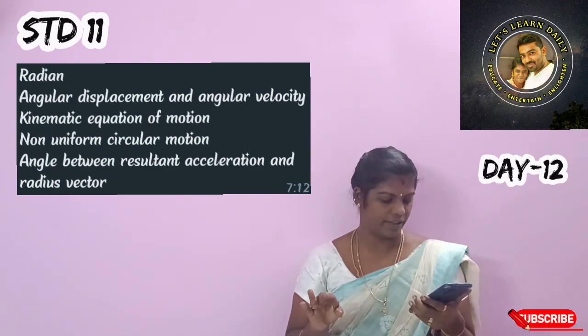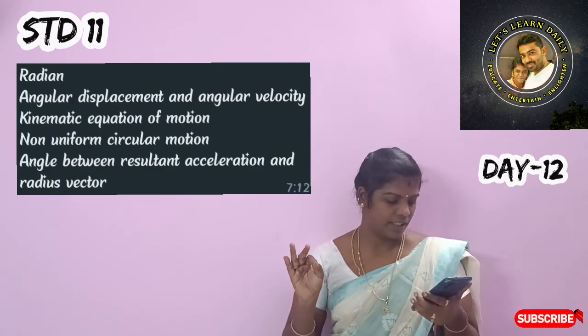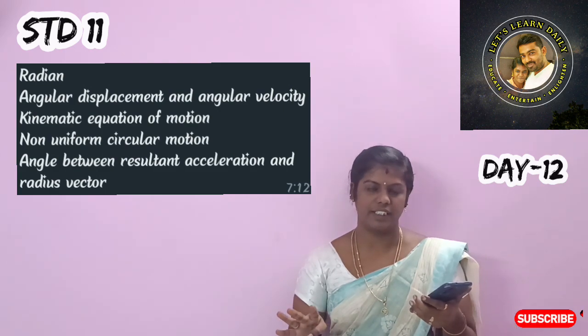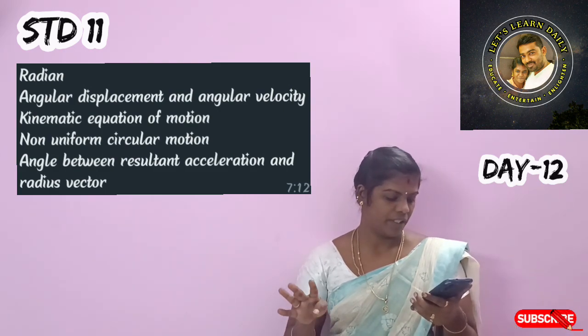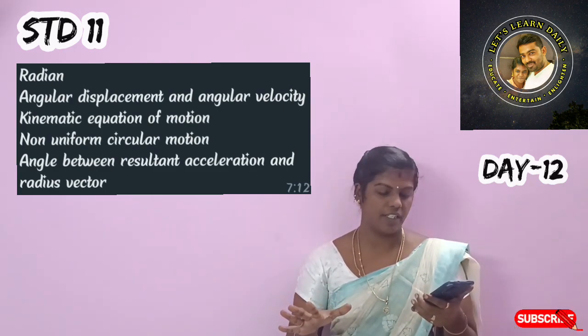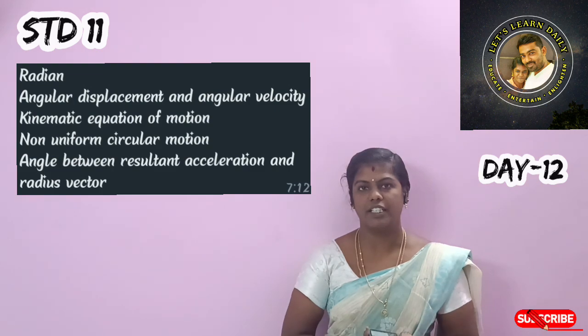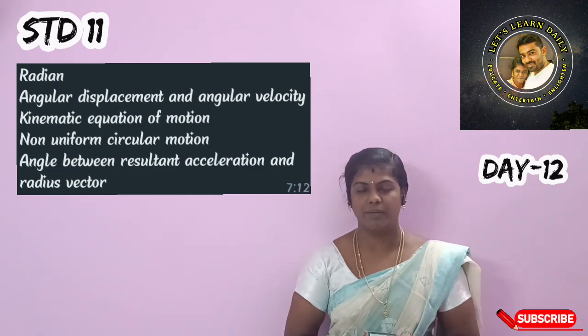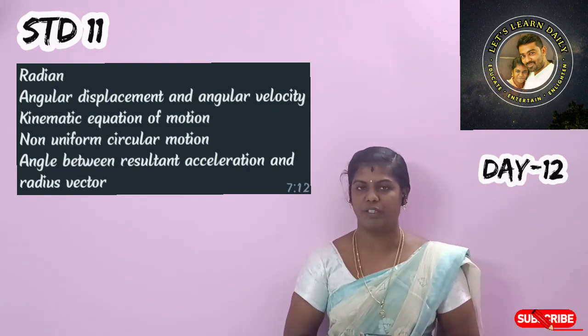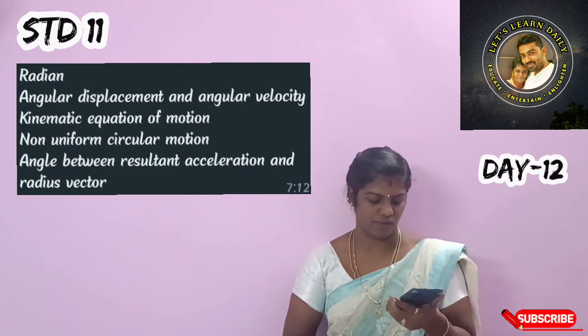Kinematic equations for circular motion. Next, non-uniform circular motion — in the example, the angle between the resultant acceleration and radius vector in non-uniform circular motion. That is an important 2-2-2 question.